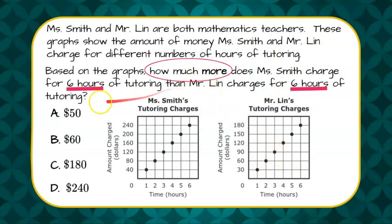We want to know how much more and it's for six hours. So we go to our graphs and we're going to look at the six hours. Six hours straight up to the data point and then over, we are going to see how much money, and it was $240 for Ms. Smith.